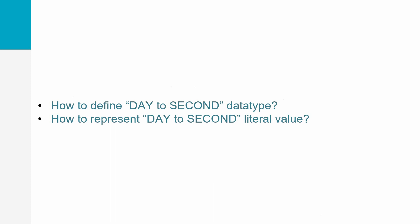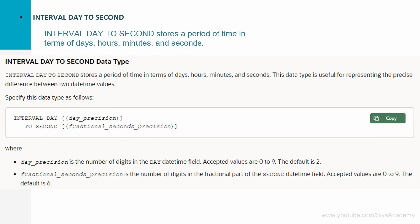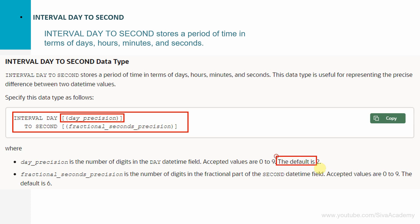Now let us see how to define the day to second data type variable and how to represent a literal value for day to second. To define any variable of interval day to second, we need to say interval day followed by an optional day precision — if you are not specifying anything, the default is two, meaning a maximum duration of two digits, that is 99 days. If you want to store more than 99 days, then we need to specify a precision. This is followed by the keyword 'to second' with an optional fractional second precision; the default is six, and accepted values are 0 to 9.